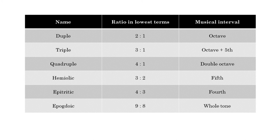The ancient Greeks had names for certain important proportions. The proportion expressed in its lowest terms as 2 to 1 is known as the duple proportion. The proportion 3 to 1 is the triple, 4 to 1 is the quadruple. The proportion 3 to 2 is called the hemiolic — familiar to musicians from the word hemiola, a 3-against-2 rhythmic figure. The proportion 4 to 3 is called the epitritic, meaning 1 plus a third. The proportion 9 to 8 is called the epigdoic, meaning 1 plus an eighth. These terms will come up throughout the division.